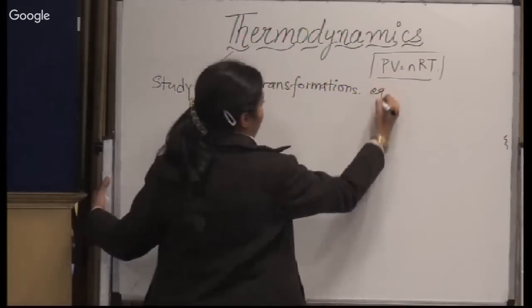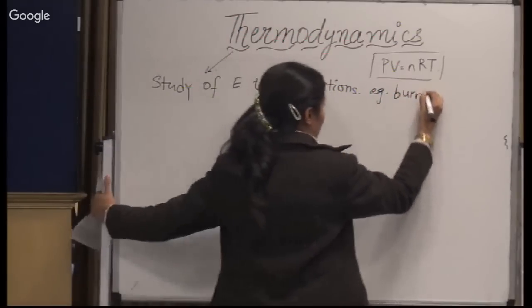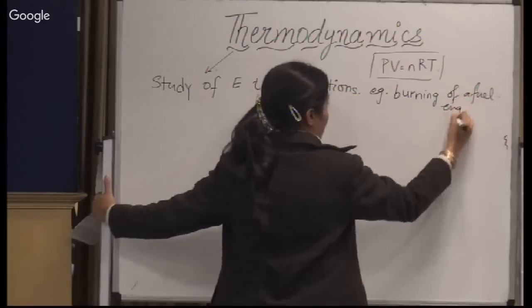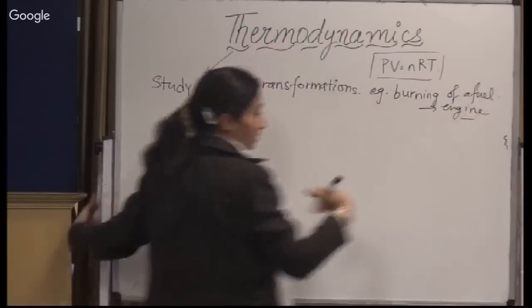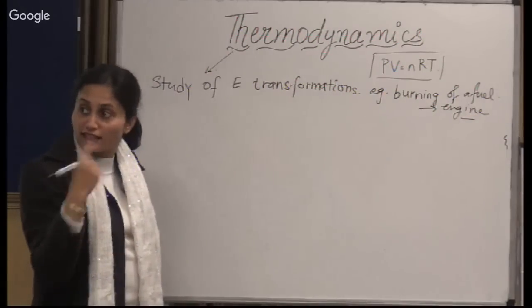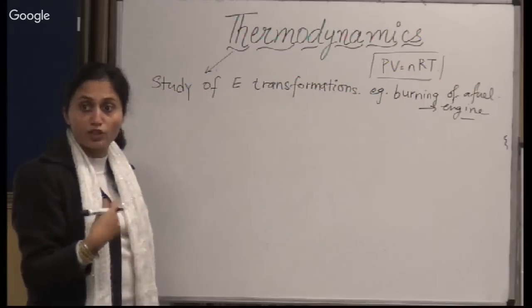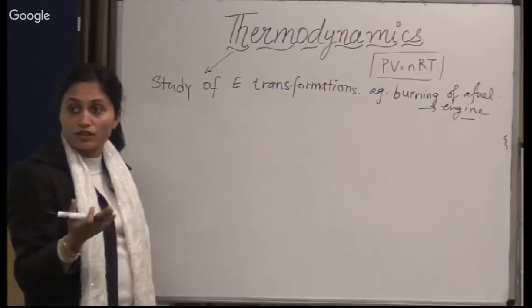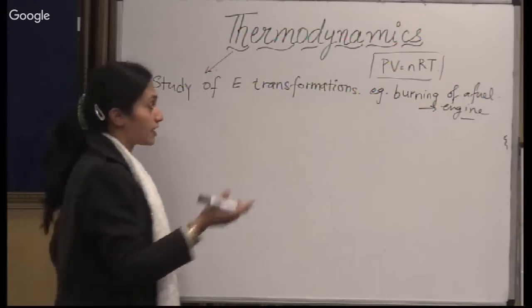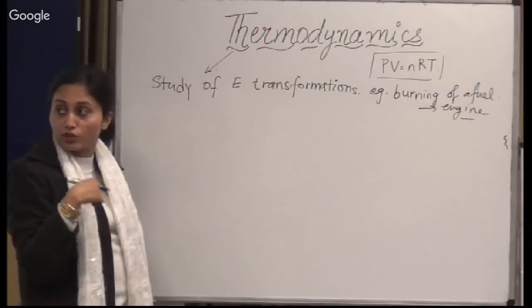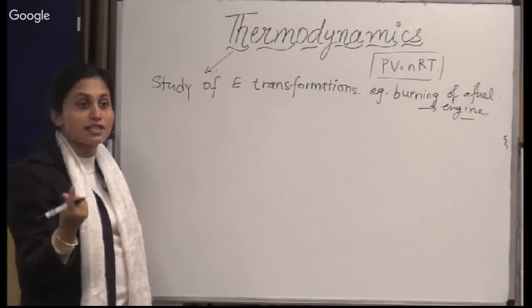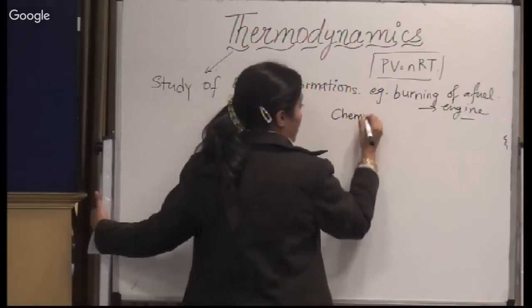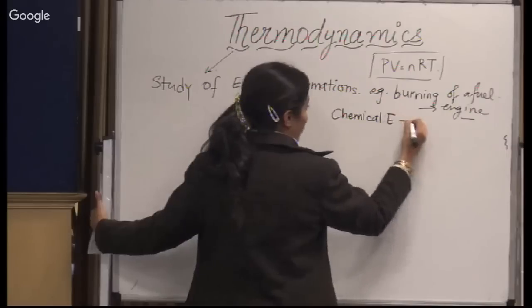Say the example of burning a fuel to run an engine. What kind of energy transformation is this? You are utilizing chemical energy because some fuel is getting burned — when hydrocarbons are burnt, the end products are carbon dioxide and water. Here, the chemical energy is getting converted to mechanical energy, because your engine is actually working and doing some kind of mechanical work.